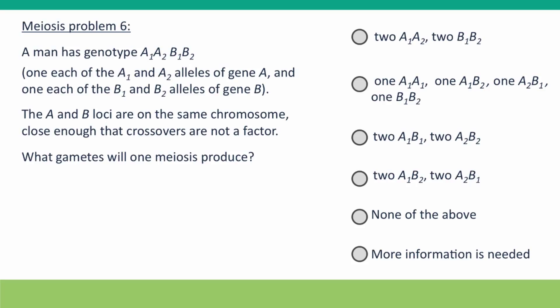But these loci are on the same chromosome, not different chromosomes, but they're so close that we don't need to worry about crossing over. What gametes is one meiosis going to produce this time?